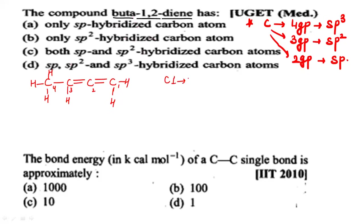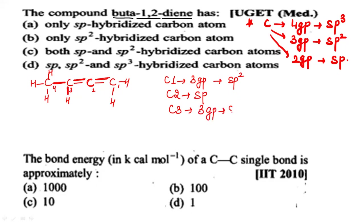Carbon 1 is attached to: one carbon, one carbon, and one hydrogen — three groups — so hybridization is sp2. Carbon 2 is attached to this carbon and this carbon only — two groups — so C2 is sp hybridized. C3 is attached to this carbon, this carbon, and this hydrogen — three groups — so sp2. C4 has one, two, three, four groups, so this is sp3 hybridization.